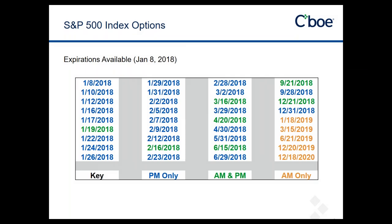We do go farther out. The orange dates out into 2019 and 2020 are actually LEAPs. Right now we only have AM settled LEAPs listed. When we get closer to those expiration dates, those dates will turn from orange to green, meaning we'll have both AM and PM expirations. The big point behind this chart is — if you've got an opinion of what's going to happen between now and the first Friday in February, February 2nd, you can express that outlook using SPX options.